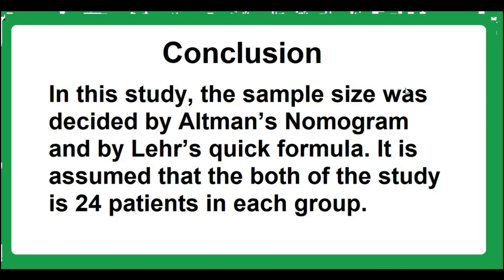In conclusion, the sample size was decided by Altman's nomogram and by Lehr's quick formula. Both methods result in 24 patients in each group being required for the study. Thank you, viewers.